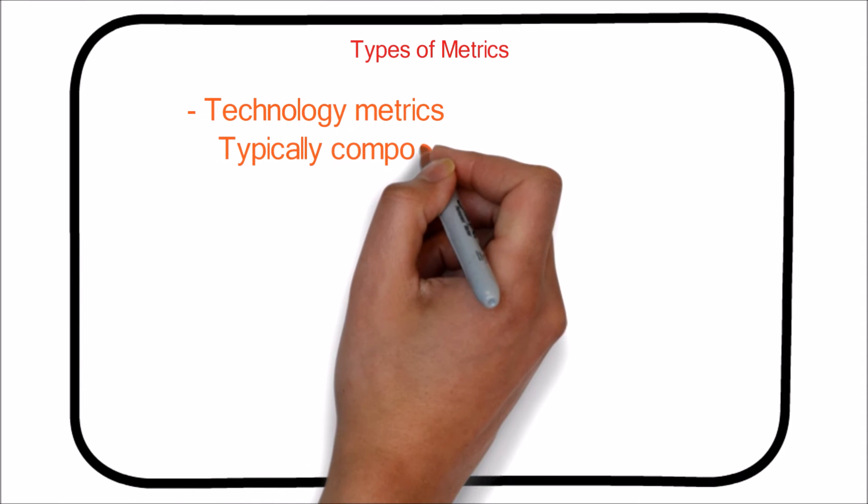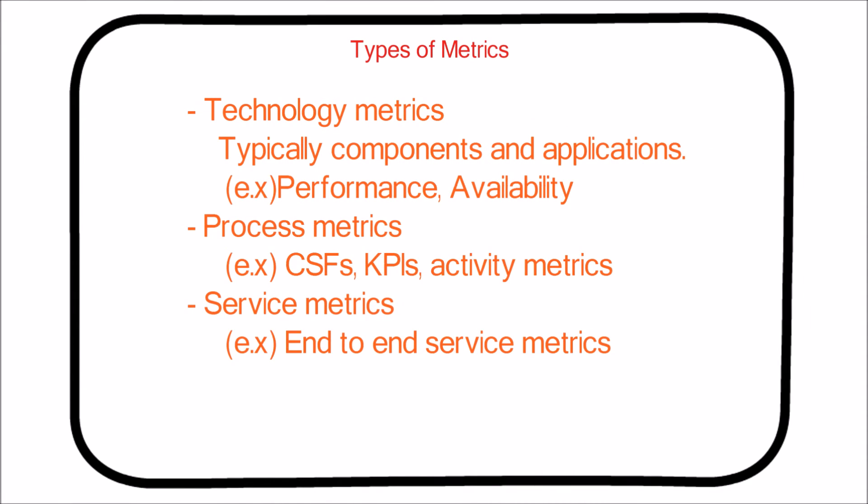There are several types of metrics. Technology metrics typically cover components and applications, for example performance and availability. Process metrics include critical success factors (CSFs), key performance indicators (KPIs), and activity metrics for ITSM processes. Service metrics are end-to-end service metrics, and often service metrics are a sum of process and technology metrics.